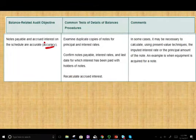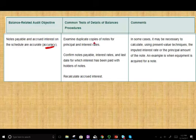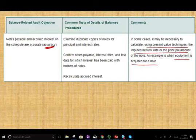We want to make sure that our numbers are correct. Notes payable and accrued interest on the schedule are accurate. Well, examine duplicate copies of notes for principal and interest rate. Basically, you want to look at, see what the note is, what's the interest rate. Confirm notes payable interest rate and the last date for which interest was paid with the holder, with the bank. Recalculate accrued interest. So basically what you do, see if the principal is correct, the interest is correct, check with the lender, and recalculate. In some cases, it may be necessary to calculate using the present value technique, the imputed interest rate, or the principal amount of the note. This is when the equipment is acquired for a note. We don't have to worry about this for now.